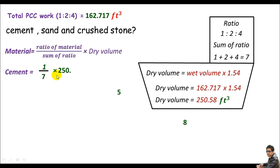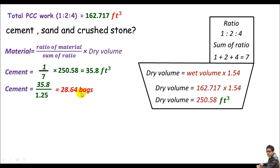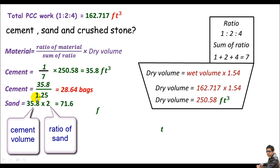Plugging in, cement = (1/7) × 250.58 = 35.8 cubic feet. Converting to bags by dividing by 1.25 cubic feet per bag (Pakistan standard), we get 28.64 — approximately 29 bags. For sand, the ratio is 2, which is two times the cement quantity: 2 × 35.8 = 71.6 cubic feet. For crushed stone, the ratio is 4, so four times cement: 4 × 35.8 = 143.2 cubic feet.